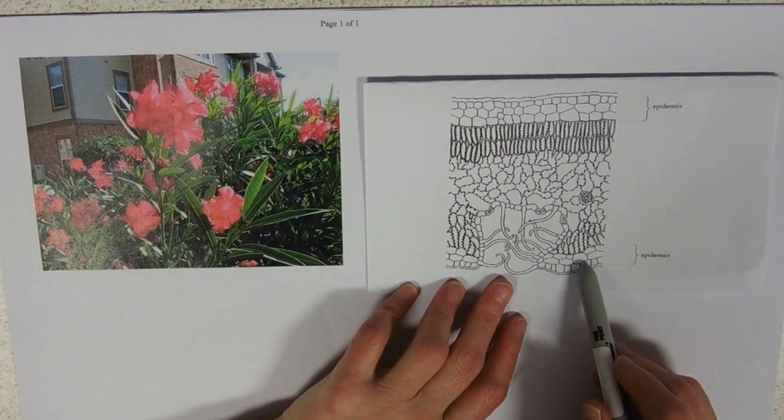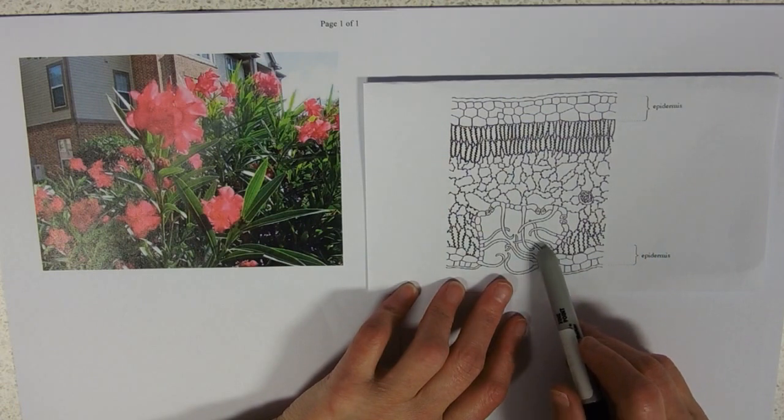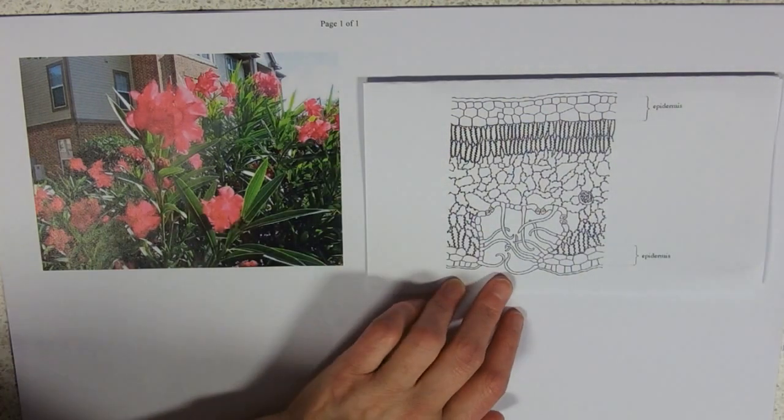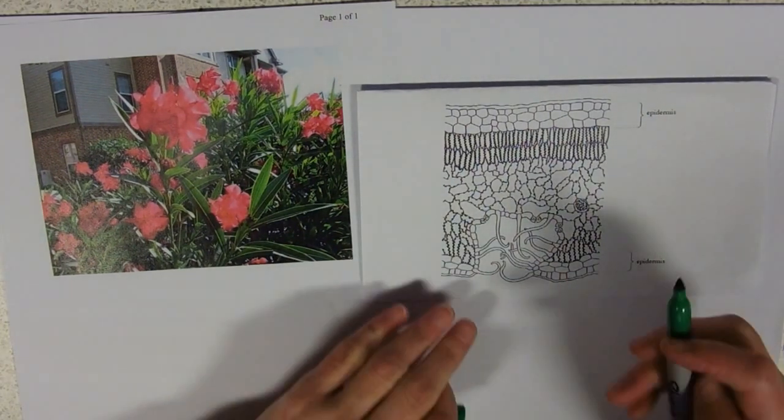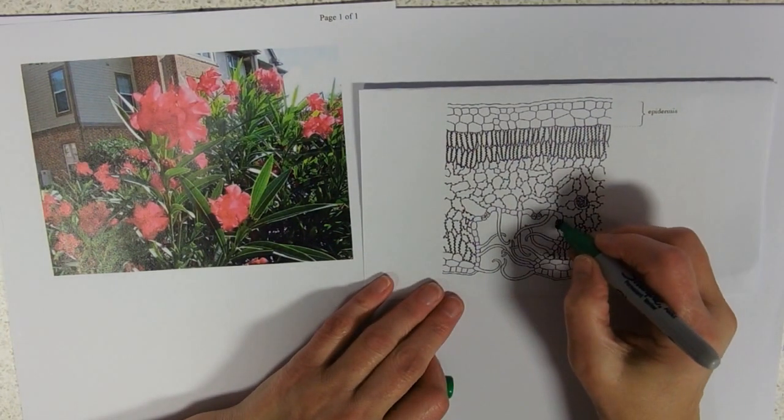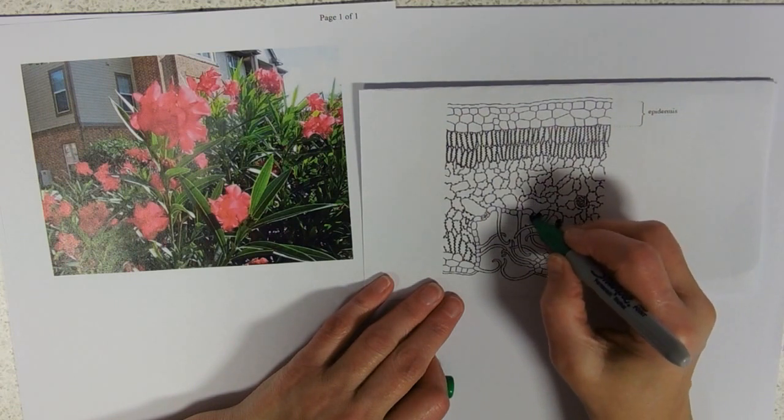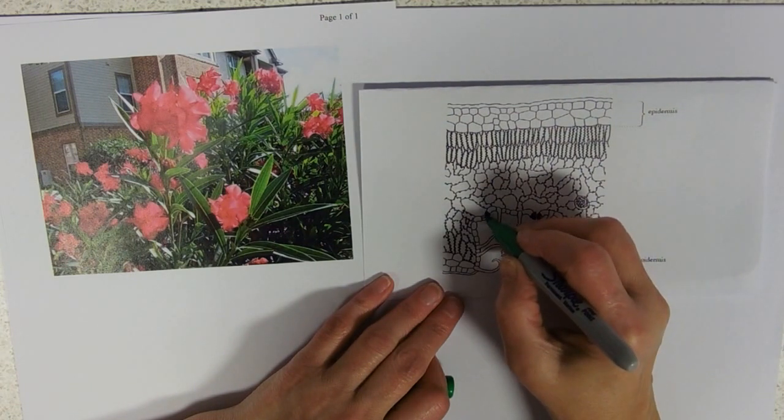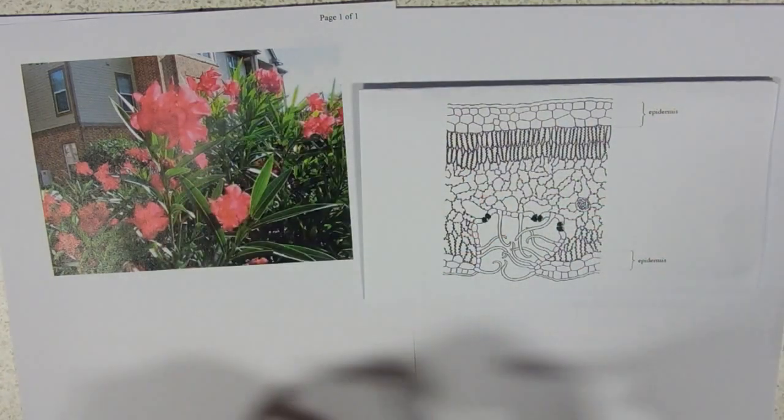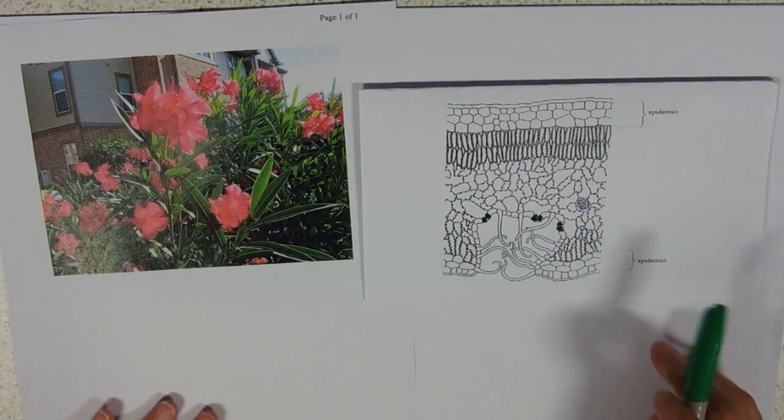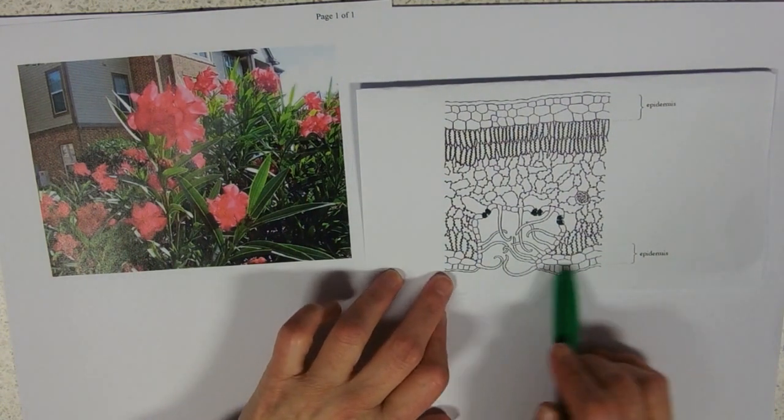If we follow it round you can see that the guard cells—I'll just color them in green so that they stick out a bit—the guard cells are sunken, so they're actually sort of in the middle of the spongy mesophyll and not directly down here where we would expect to see them.